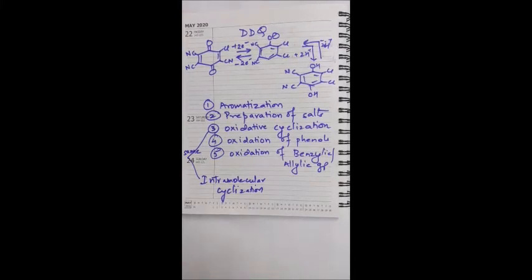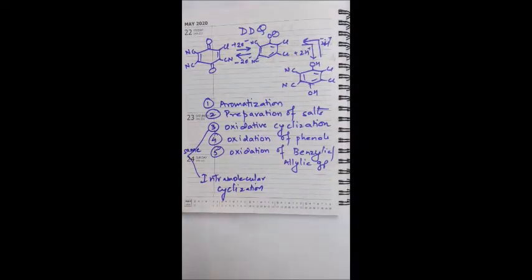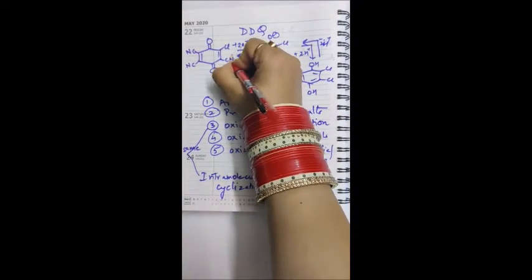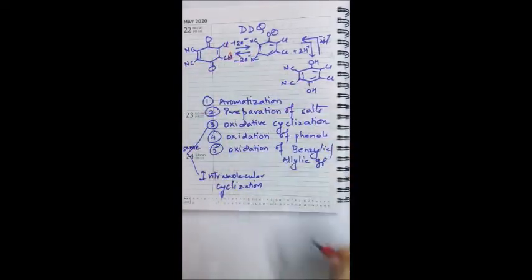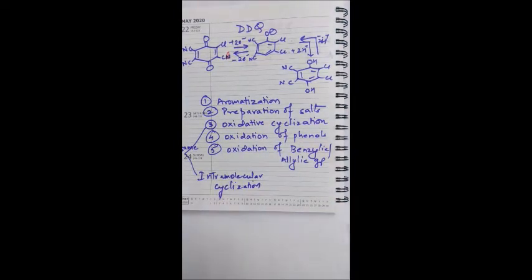Good morning class. Welcome to full syllabus channel. Now let's do the next oxidizing agent, that is DDQ. DDQ means dicyano-dichloroquinone, meaning it has 2 Cl and 2 CN groups. It can show oxidation reactions by itself reducing and oxidizing the substrates.